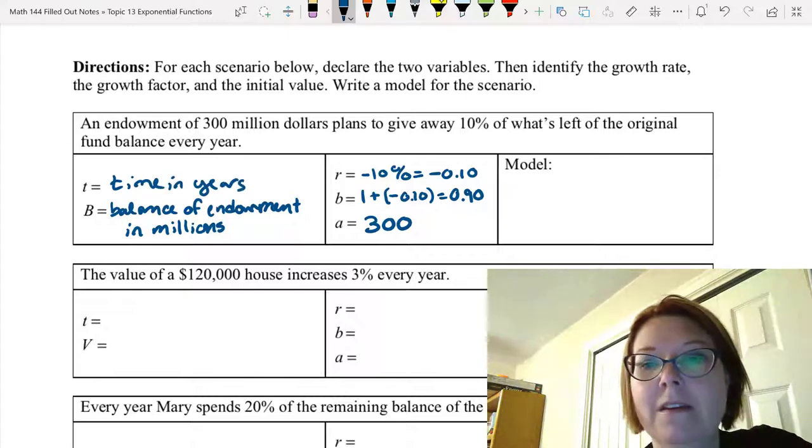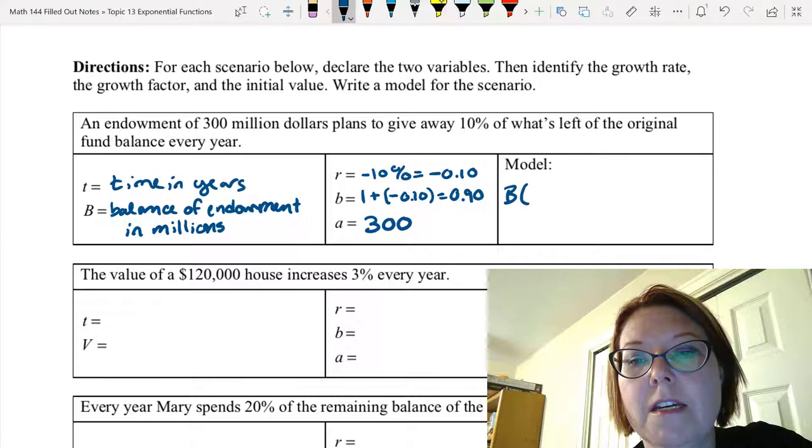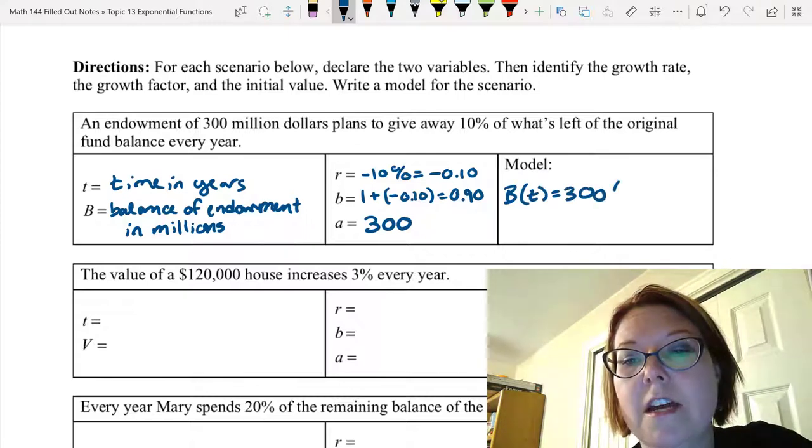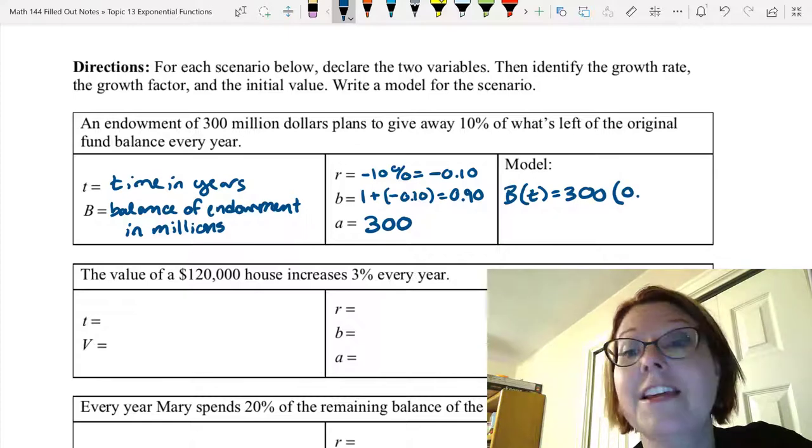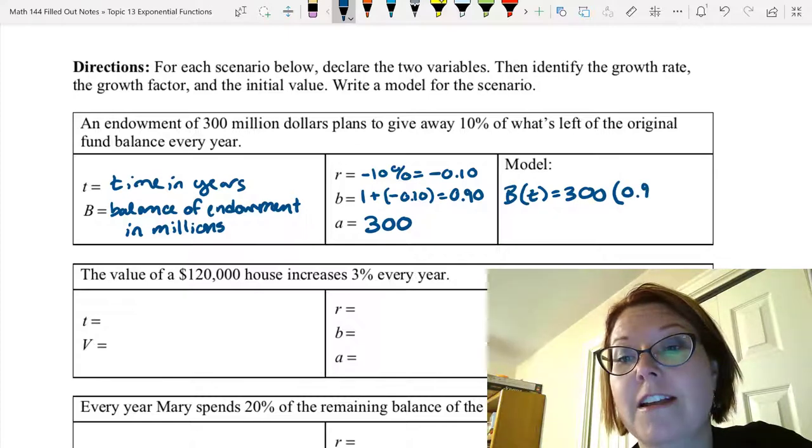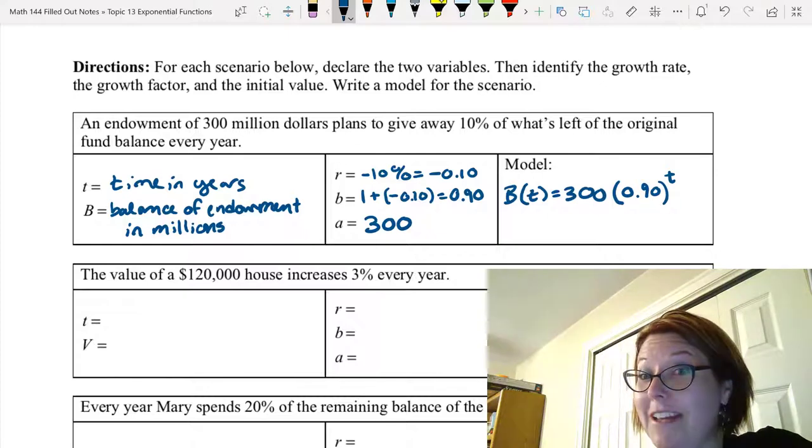Okay, so now our model. Let's write B of T equals the initial value 300 times left parentheses, and then our growth factor 0.90. And that's raised to the T power. Hopefully you got that one.